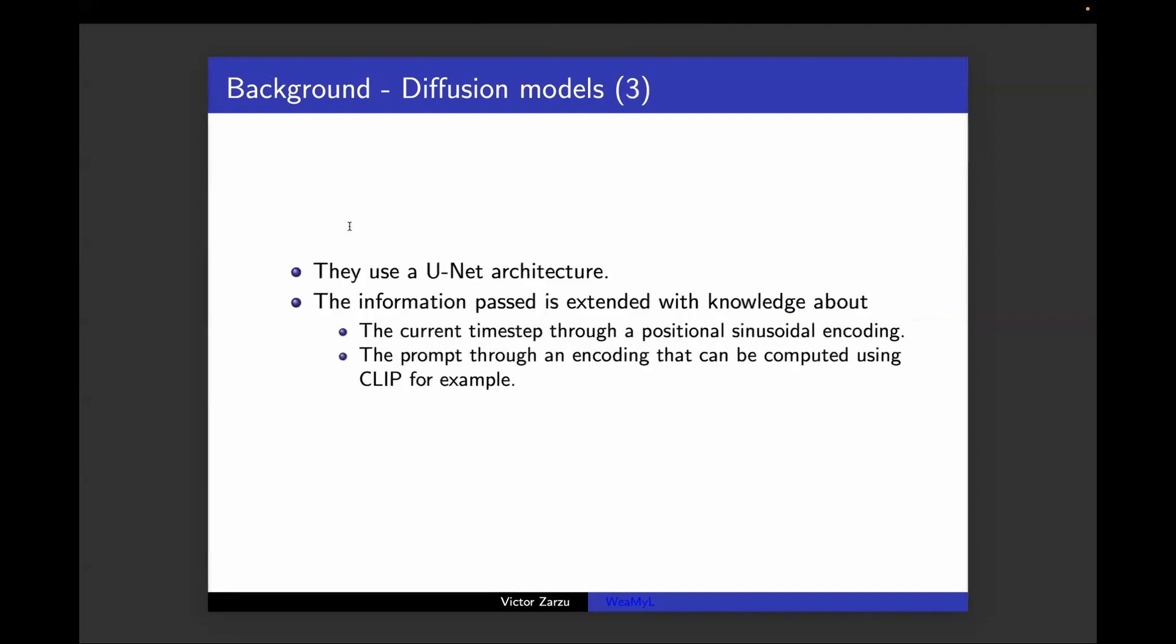For the architecture, existing models usually have a U-Net architecture because the input has to be the same dimension as the output. The information that passes through this U-Net architecture is the prompt, if the model has a prompt, which is usually encoded using CLIP, and the current timestamp, which the model needs to have information about through some encoding that can be a sinusoidal one.